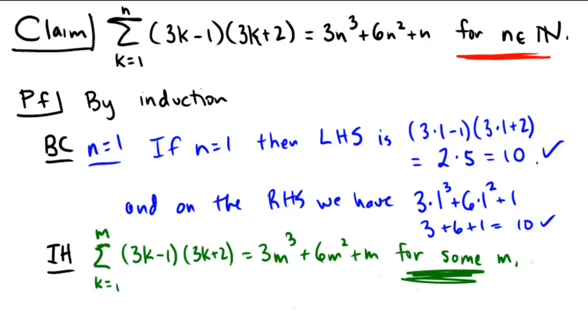Okay, so when we move on into the induction step, we consider the sum from k equals 1 to m plus 1 of our statement. So we're going to move on one step on the ladder. Here we get 3k minus 1, 3k plus 2, and we're going to work with this. The first thing I'm going to do is split it into two pieces.